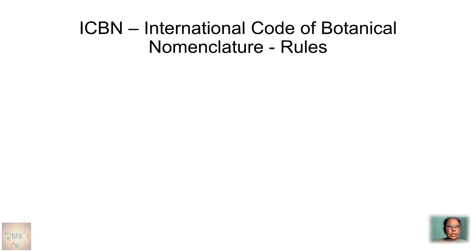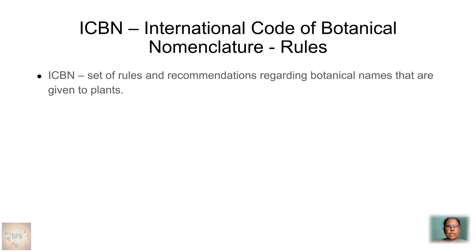ICBN is the set of rules and recommendations dealing with the botanical names given to plants. As studied, during the 12th IBC held at Leningrad in 1975, ICBN was revised and published in 1978. The binomial system we follow today obeys the rules of ICBN. So if you discover a new plant, you must follow the rules of ICBN when giving it a new name.